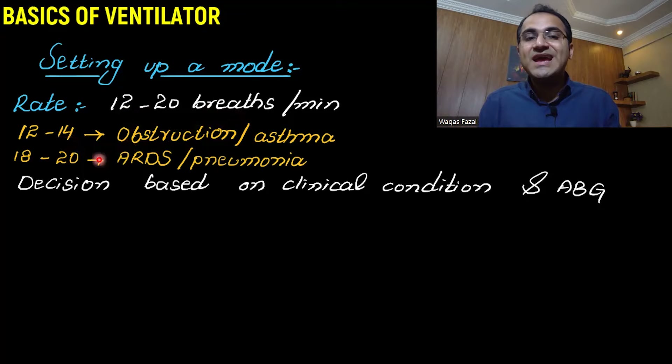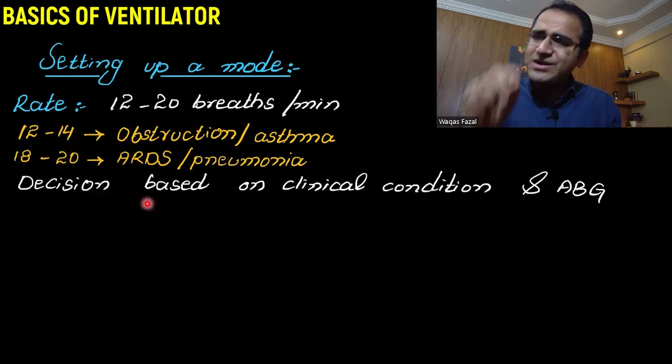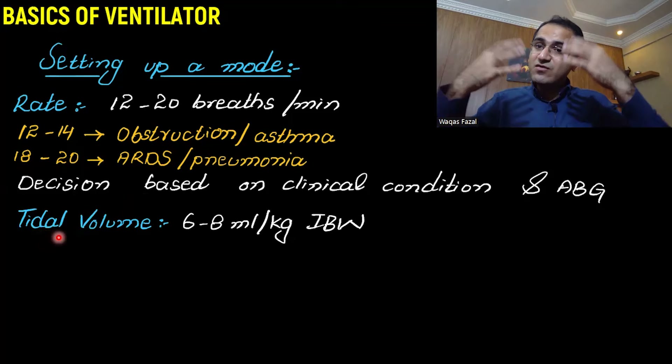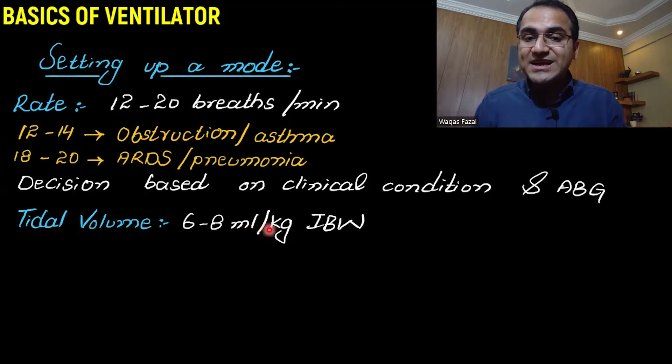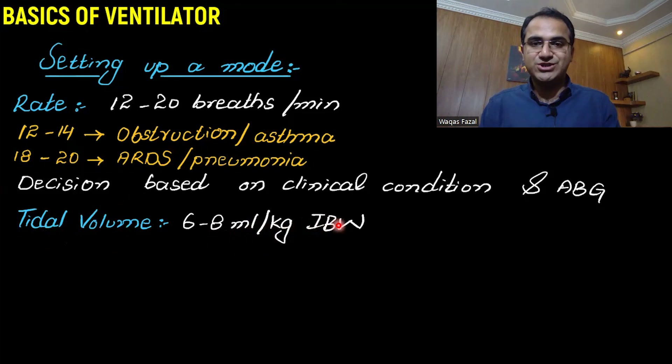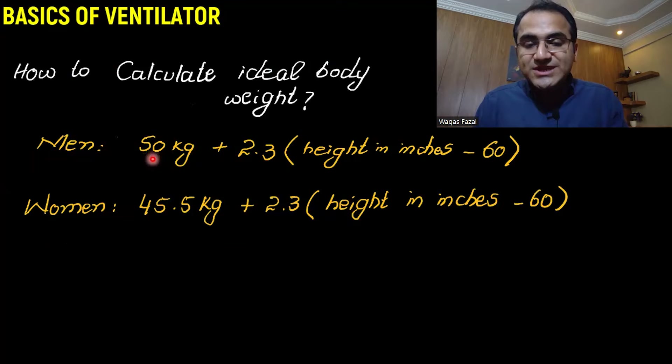In obstruction and asthma, we keep the rate on the lower end — 12 to 14. In ARDS and pneumonia, we keep it slightly higher — 18 to 20. The decision depends on the clinical condition and ABGs. Tidal volume is the volume of air given with each breath, set at 6 to 8 ml per kg of the ideal body weight.